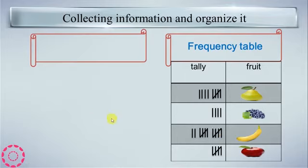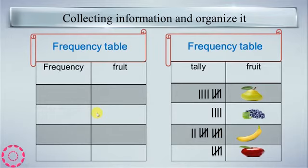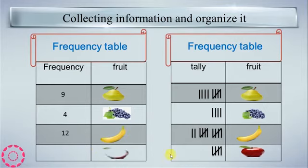Let's know the fruit and their frequency table. Fruit and frequency. This fruit is 9. 1, 2, 3, 4, 5, 6, 7, 8, 9. The grapes: 1, 2, 3, 4. Four grapes. The bananas: 1, 2, 3, 4, 5, 6, 7, 8, 9, 10, 11, 12. Twelve bananas. And the apples: 1, 2, 3, 4, 5.